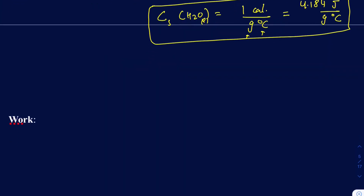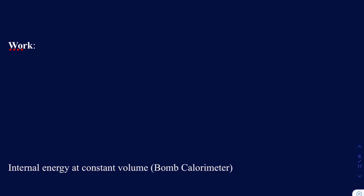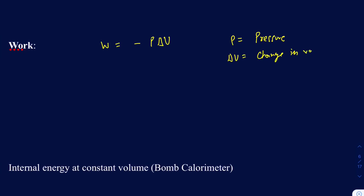Now let's talk about calculating work — the other parameter in the thermodynamic equation. The value of work can be calculated as negative pressure times the change in volume: W equals negative P times delta V, where delta V is V final minus V initial. You don't use this equation as often in chemistry problems since Q handles most energy calculations, but you will use it extensively in physics.